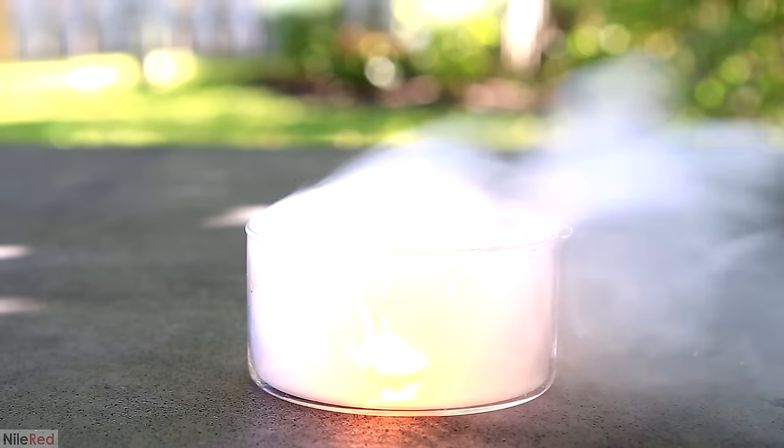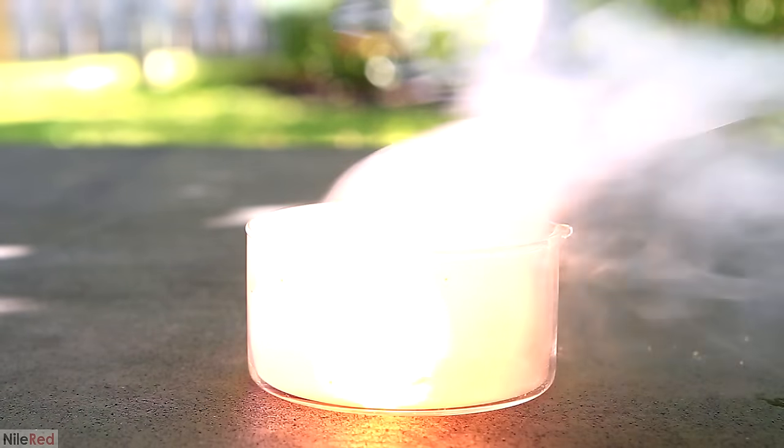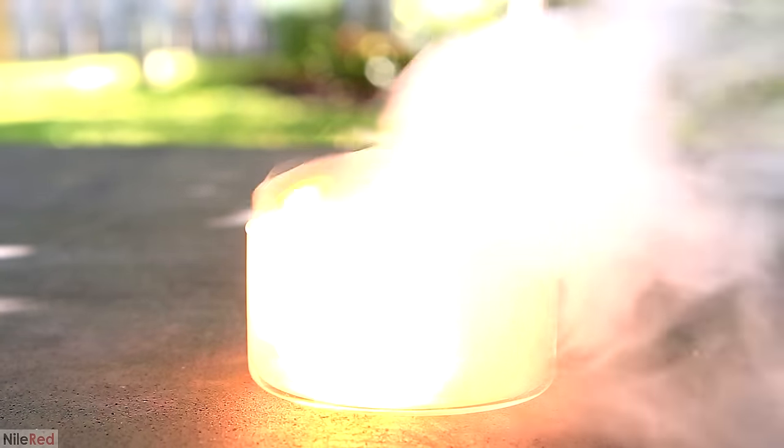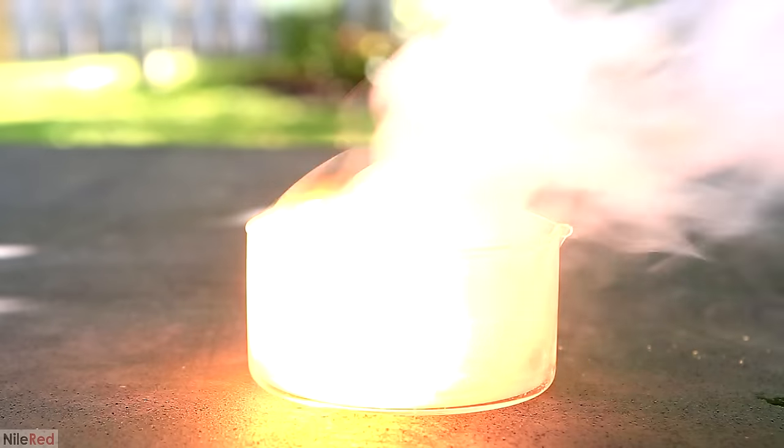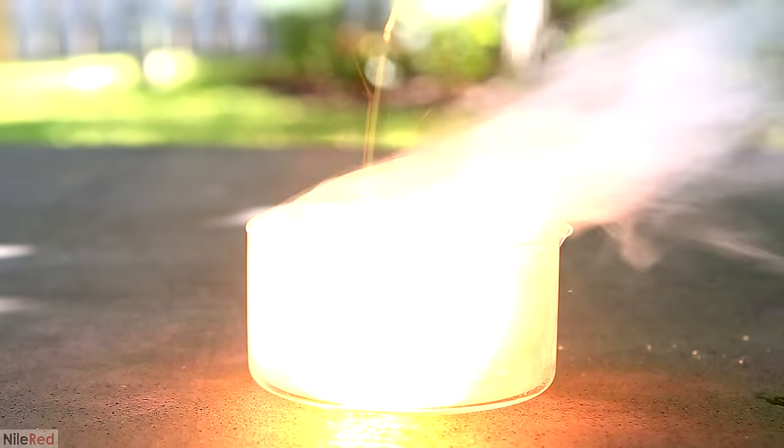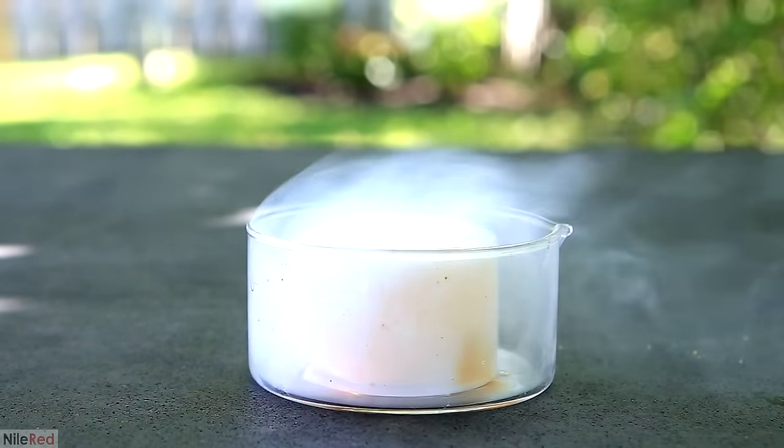White phosphorus is more reactive and it's capable of doing some different reactions. Once I make the white phosphorus, I will use it to make something called phosphorus pentachloride, which I will in turn use to make glow sticks.